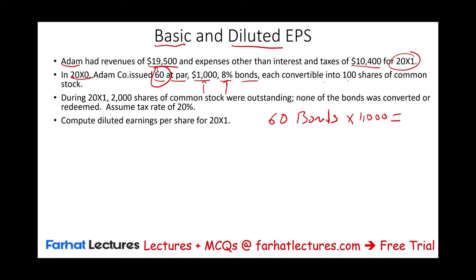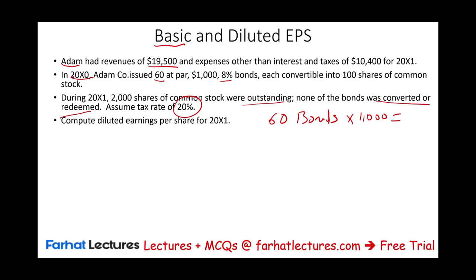Each one of these bonds is convertible into 100 shares of common stock, so these are convertible bonds. Because we have convertible bonds, we have to compute potential diluted earnings per share. Assuming in X1, 2,000 shares of common stock were outstanding, none of the bonds was converted or redeemed, and assume a 20% tax rate.